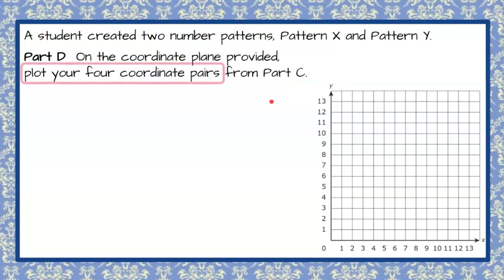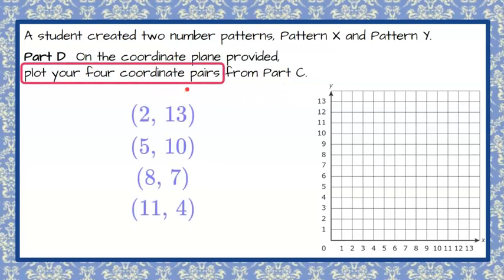Welcome back. So bringing forward, we're going to plot those four coordinate pairs that we got from our part C. And just to remind you, an ordered pair is (X, Y). So the first one is X. So we're going across the X axis. It's positive, so we're going to the right 2. And then Y tells us to go up to 13.